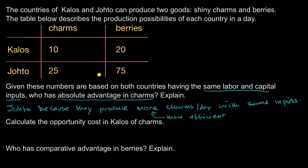Interestingly, our intuition might say that whoever has the absolute advantage should be producing charms. But this is what's interesting when we study comparative advantage — that is not always the case, and I suspect this question will lead us there.